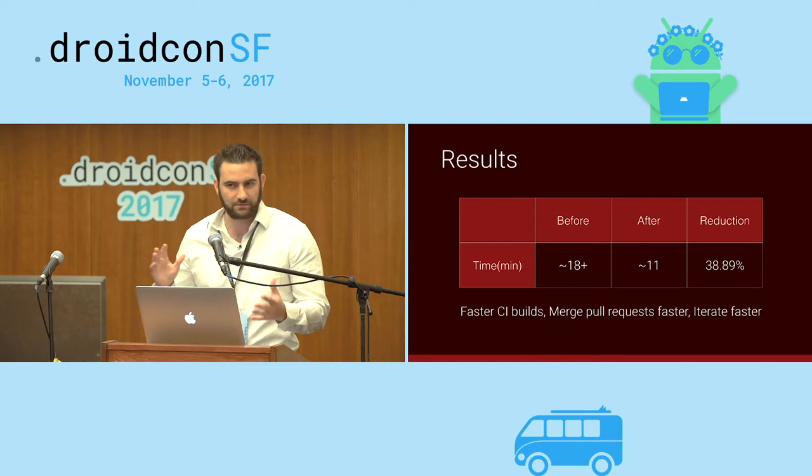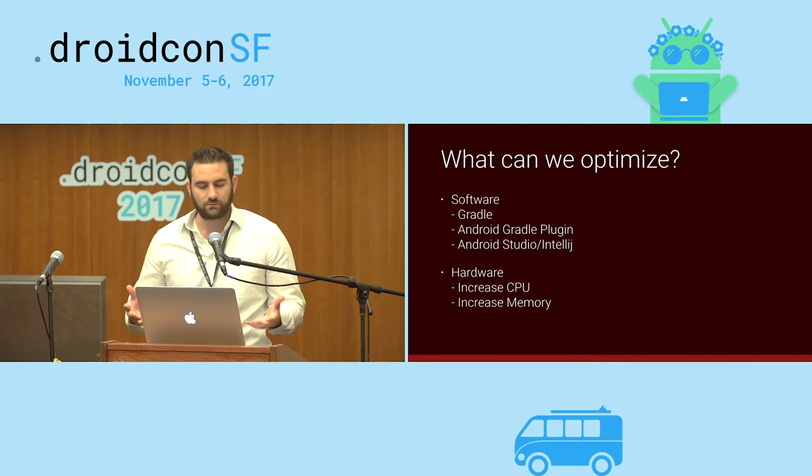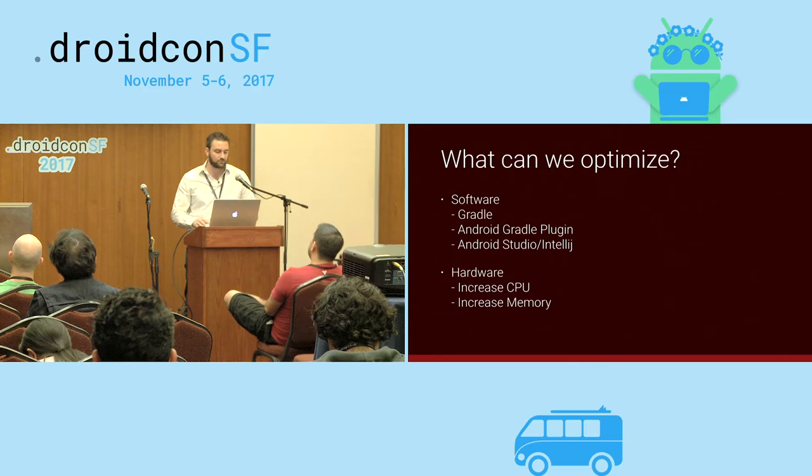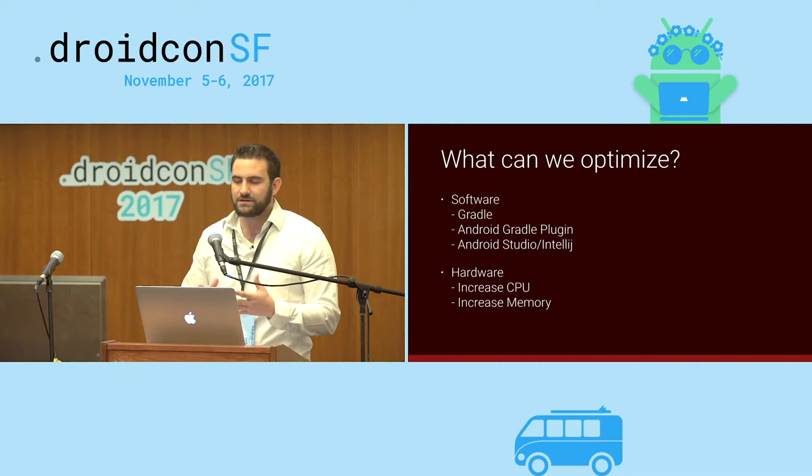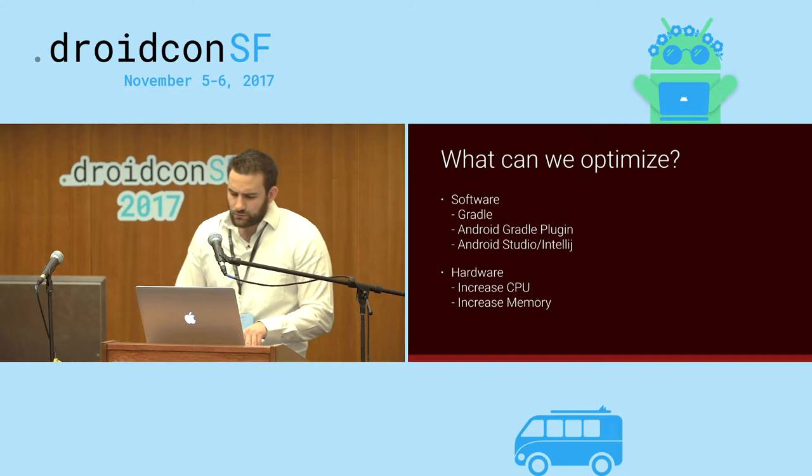So what can we optimize? First, we have hardware — we can increase CPU and memory, though these cost a lot of money. At the software level, what can we do with Gradle, Gradle properties, the Android Gradle plugin, and our IDEs? This talk will be solely focused around the software part.